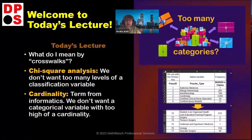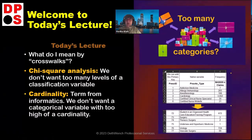What do I even mean by crosswalks? I want you to start by thinking about categorical variables. If you do statistics, you might think of a chi-square analysis — that's a nice bivariate categorical variable analysis. We're talking about crosswalks and categorical variables.